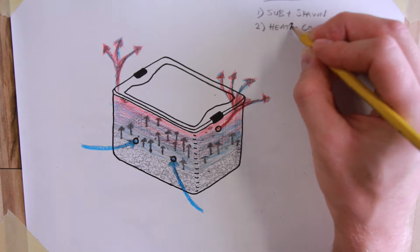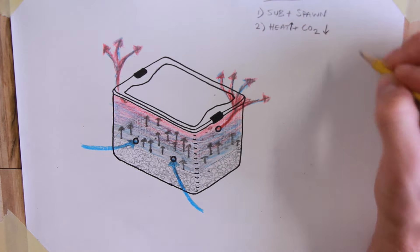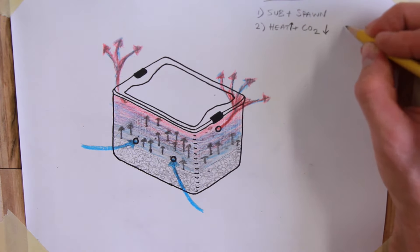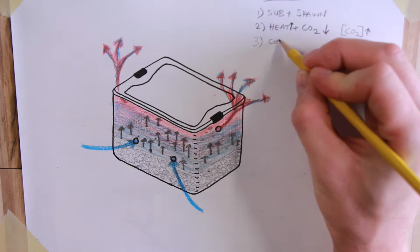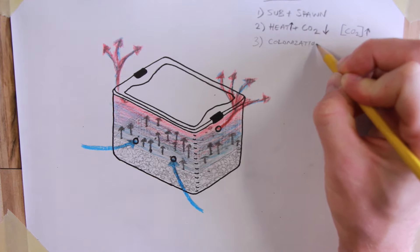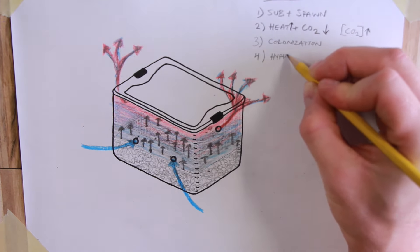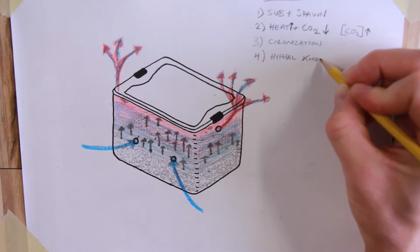Now I just want to review the steps that occur in a mono tub. We start with substrate and grain spawn. Heat and carbon dioxide are generated. The heat rises, carbon dioxide falls to the bottom, and the concentration of carbon dioxide rises inside the mono tub.